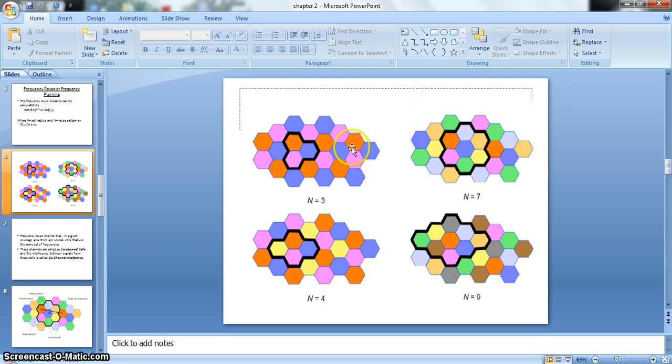In this slide you can see the different cluster sizes: a cluster size of 3, that is N equals 3, a cluster size of 7, a cluster size of 4, and a cluster size of 9.